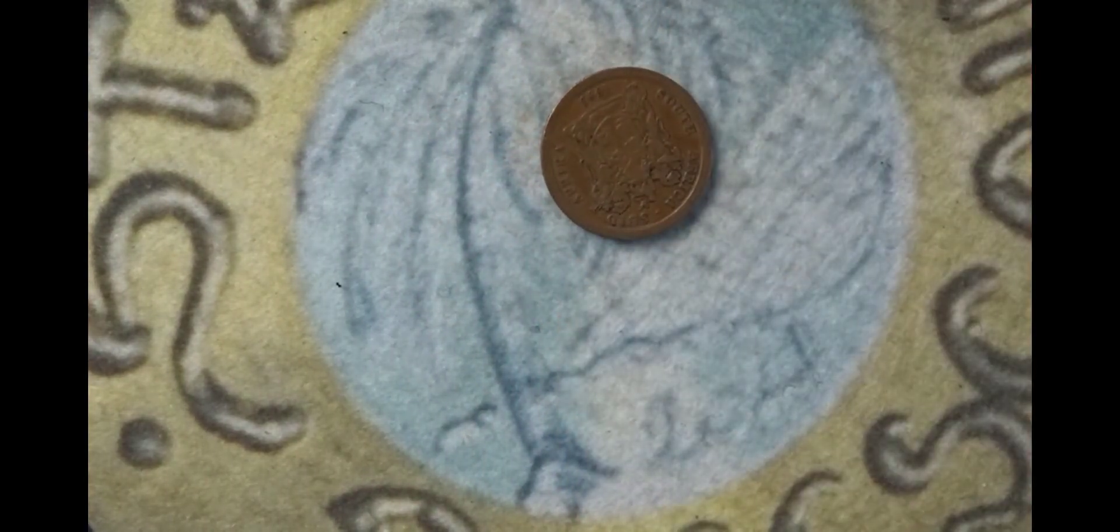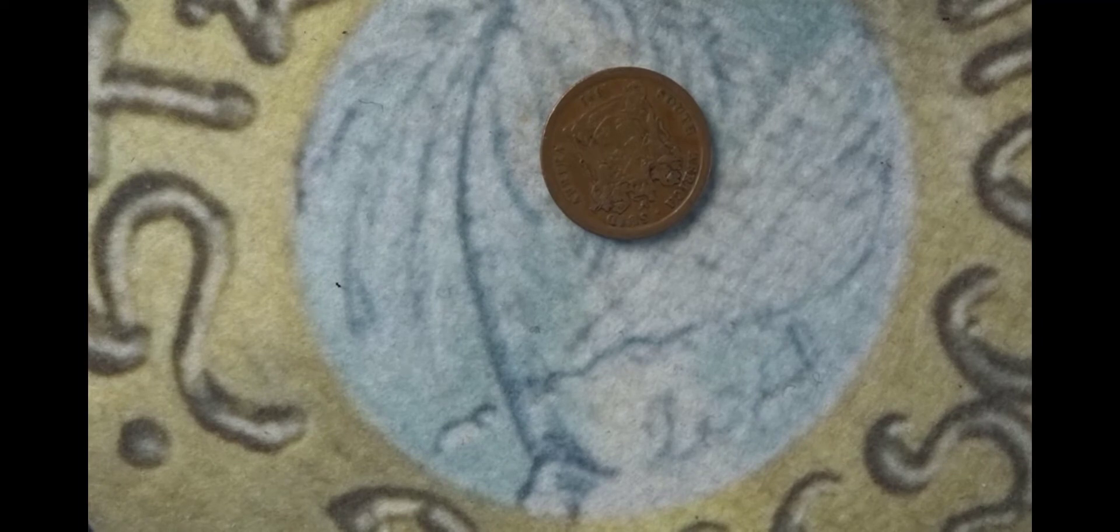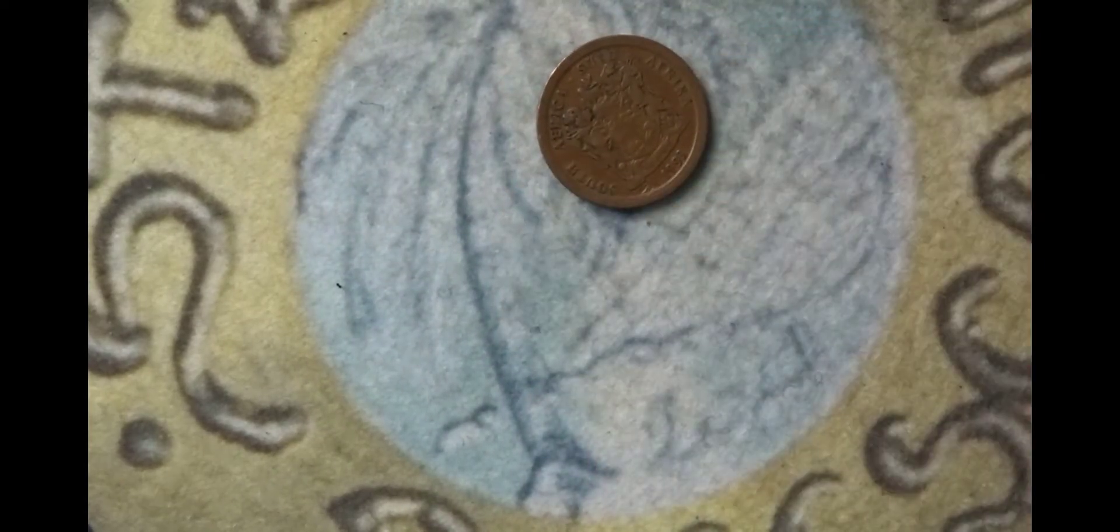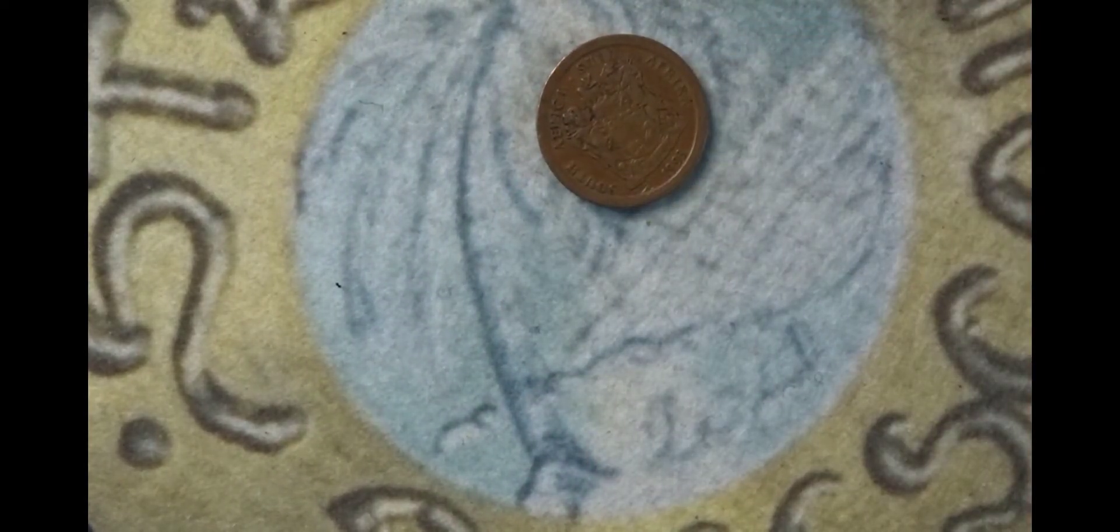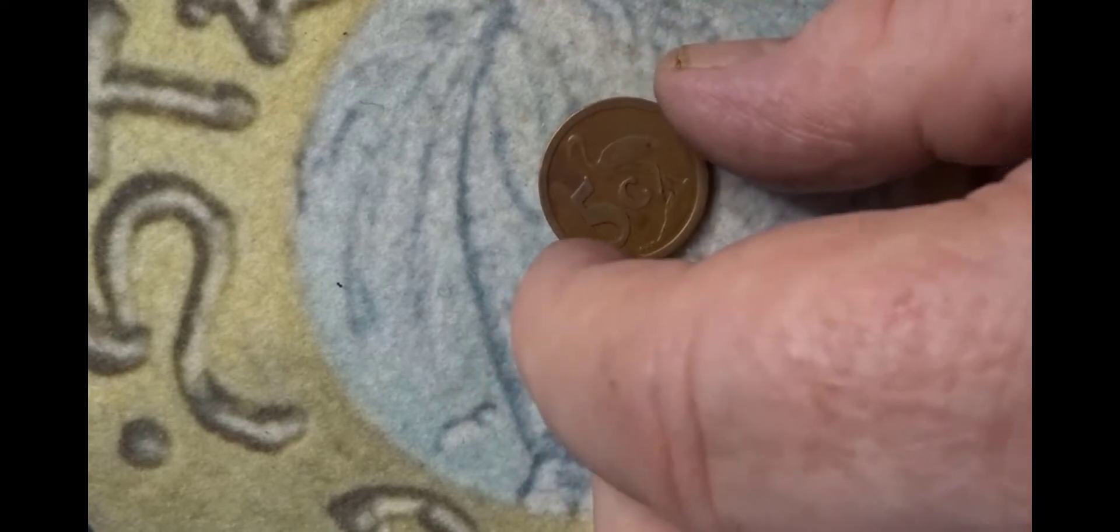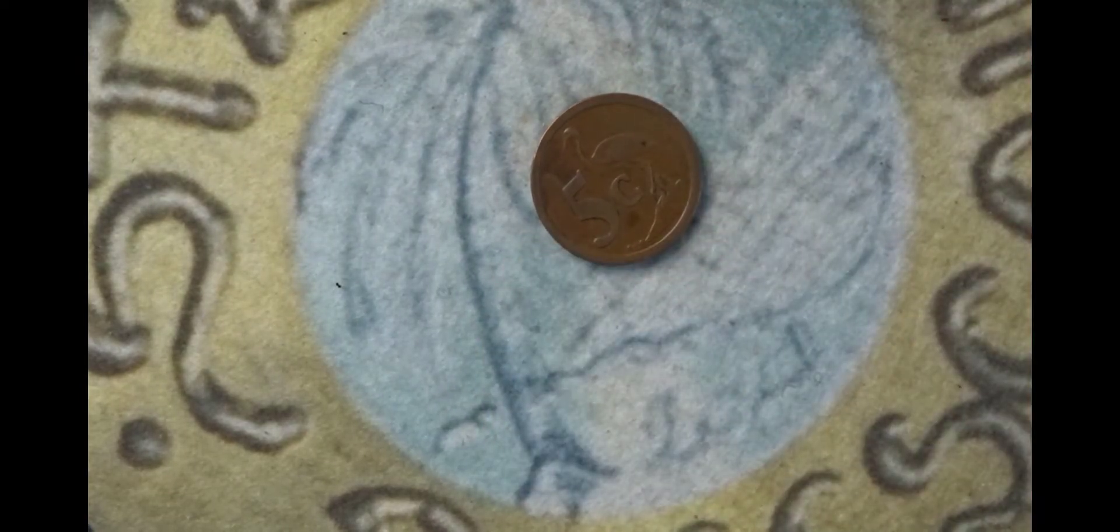This one is a South African coin from 1993. It has the coat of arms and the year on the obverse. On the reverse you have the five cents with the blue crane.